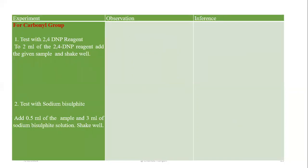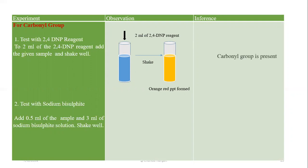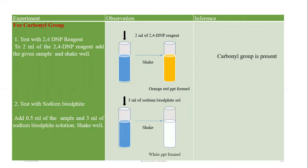Now we have the possibilities of aldehydes or ketones, which are together called the carbonyl group. For the carbonyl group we perform the 2,4-DNP reagent test: we shake and find that an orange-red precipitate is formed, showing the carbonyl group is present. We also perform the sodium bisulfite test: we add 3 ml of sodium bisulfite solution and shake — a white precipitate forms, which also indicates the carbonyl group is present.